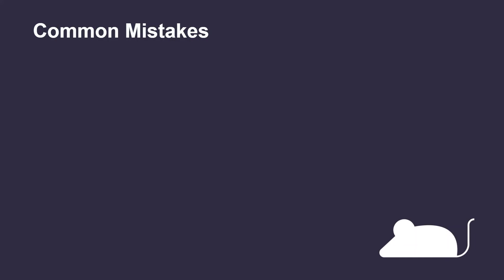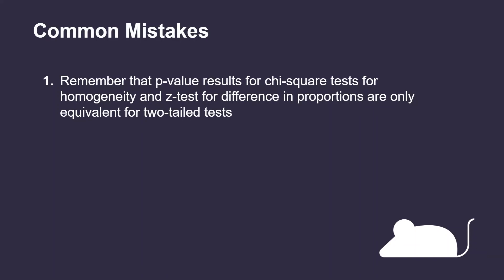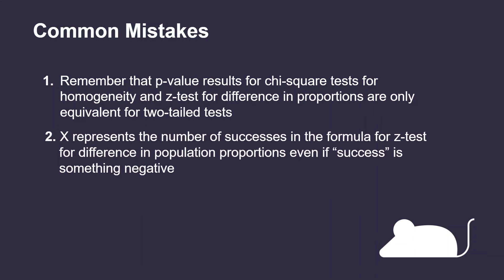There are two common mistakes students make when discussing methods of analyzing 2-by-2 tables. The first mistake involves falsely believing that the p-value results for a chi-squared test for homogeneity and a z-test for difference in population proportions are always the same — this is only the case when the z-test is two-tailed. The second mistake involves misunderstanding the meaning of 'success' for x when calculating the z-test statistic. For example, if we want to calculate the proportion of mice that die when given a new research drug, although it sounds morbid, the proportion of mice that die is our success in the context of the problem.